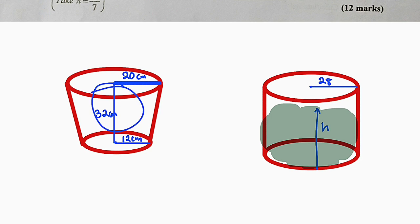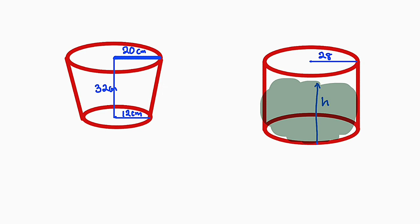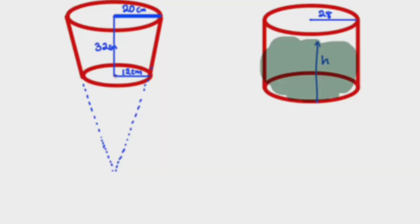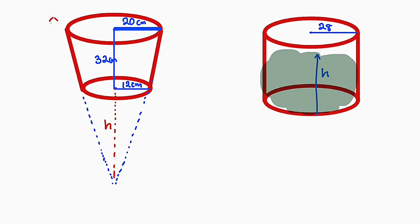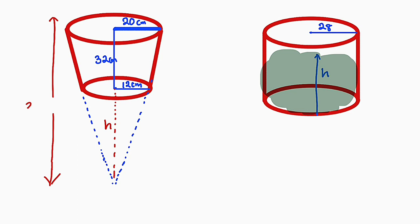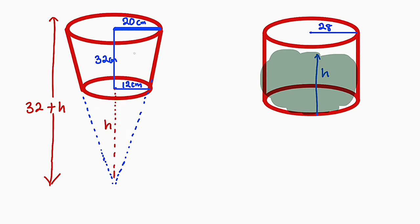We need to find the volume of this water first. This is a frustum. To find the volume of a frustum, we need to sketch a cone. This is the height of the cone. If we call this the height of the smaller cone h, then the entire height of the big cone will be 32 plus h. So we have a smaller cone with height h, and the big cone with height 32 plus h.